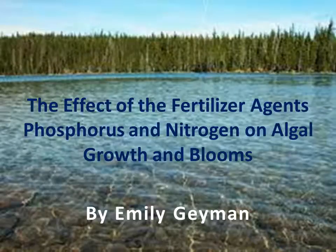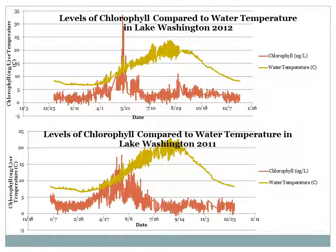The effect of the fertilizer agents phosphorus and nitrogen on algal growth and blooms. I was really interested in algae and I found that King County puts out data gathered from lake monitoring buoys in nearby lakes including Lake Washington. I downloaded the data for the past couple years to look at some of the trends of different characteristics that the buoys monitor, including levels of chlorophyll, which gives a rough estimate of the algae concentration, and water temperature.